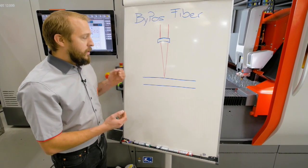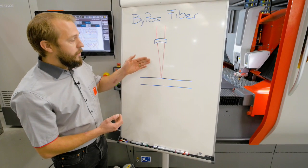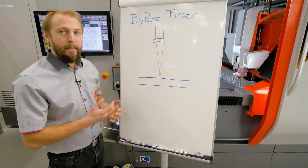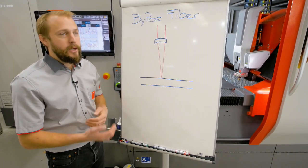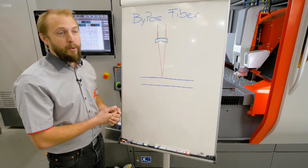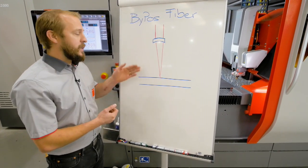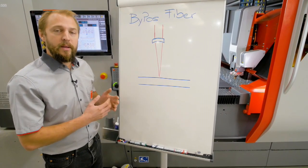This spot sometimes has to be higher or lower in the material, depending on the thickness of the material, the material kind, and of course the processes. For instance, for piercing, it has to be in a different spot than for cutting.